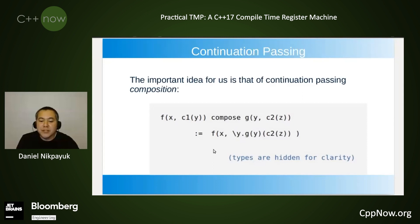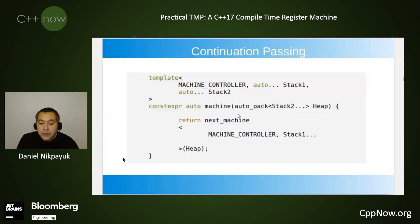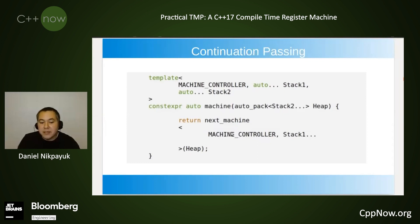The monad allows us to create composition that acts like composition for regular functions. We interpret each controller instruction as being symbolic of its own continuation passing function. This means our stack machines will perform their intended instructional behavior, but instead of returning directly, they pass the results to the next stack machine.